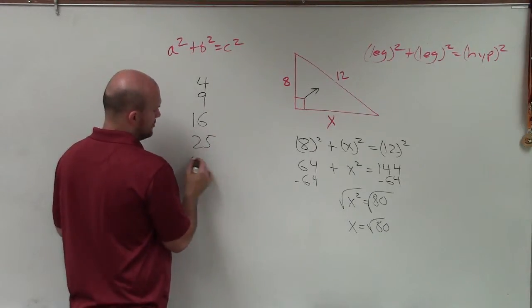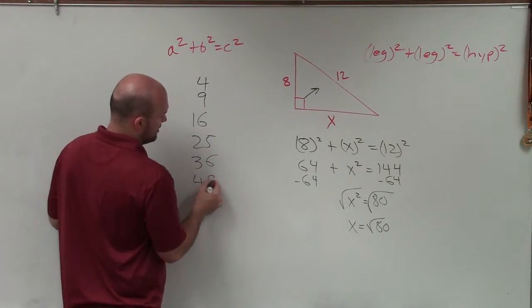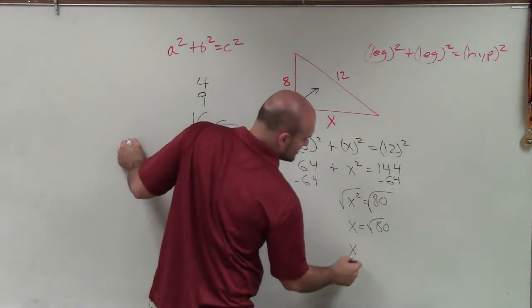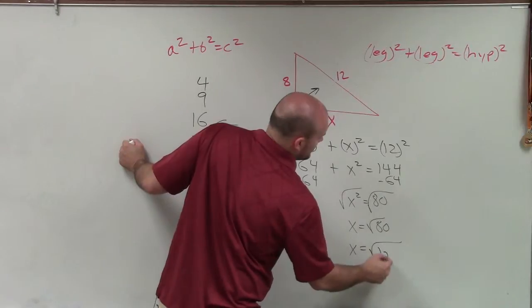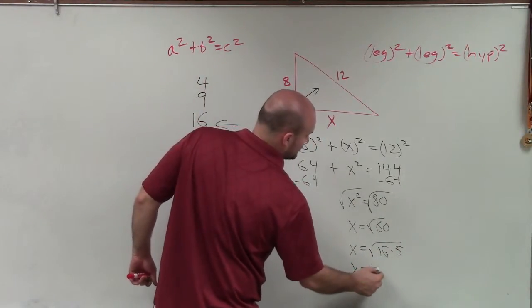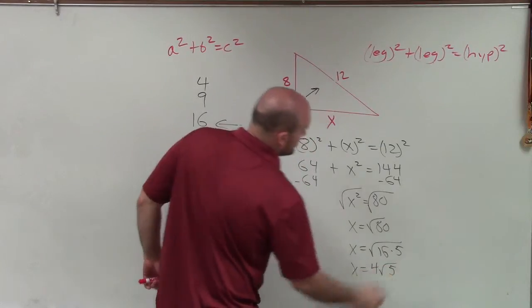Let's check 25. No. 36. No. 49. No. So it looks like 16 is going to be my largest number. So I write this as x equals the square root of 16 times 5. Now I can take the square root of 16, which equals 4 times the square root of 5.